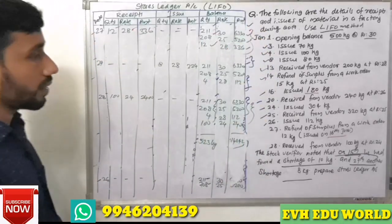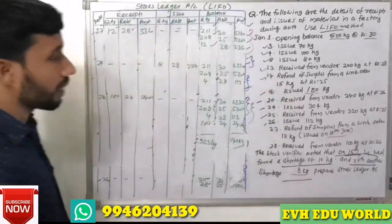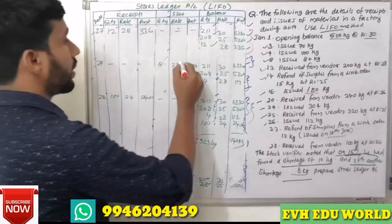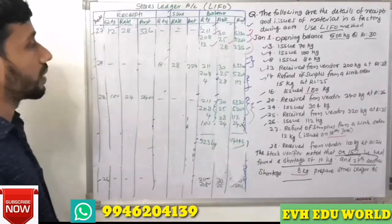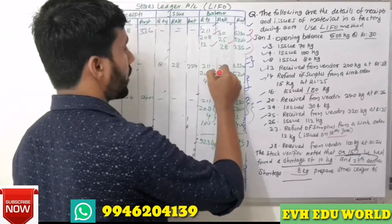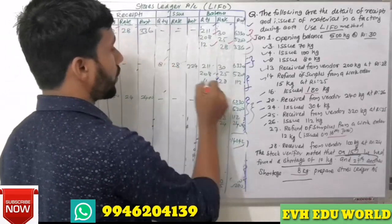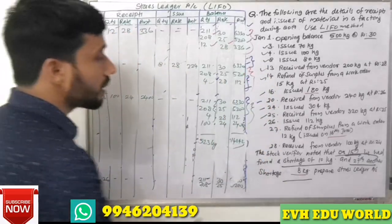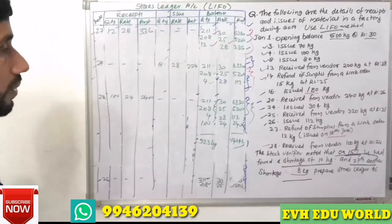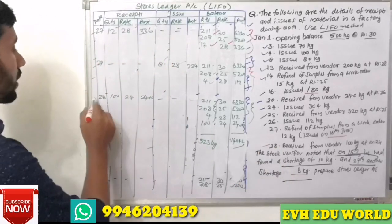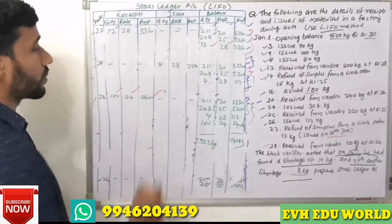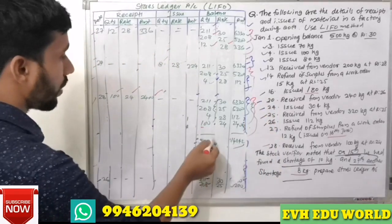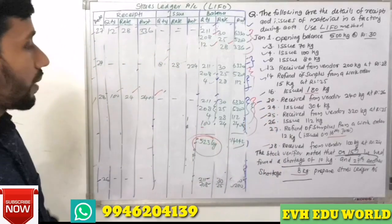There is a shortage of 8 kg on 27th, which is noted. Then on 28th, received from vendor 100 kg at Rs.24, total Rs.2,400. The balance is updated to include this receipt. The closing stock total is then calculated.